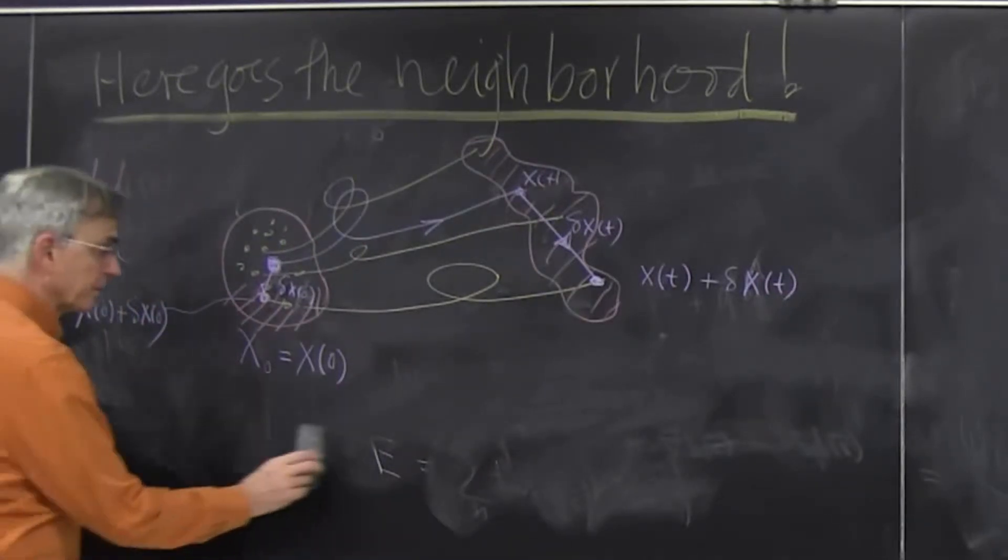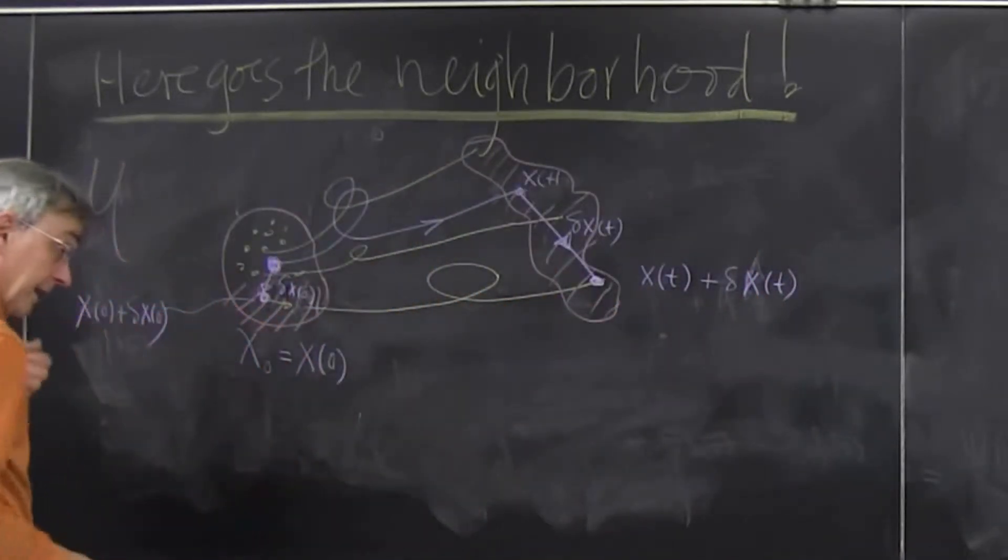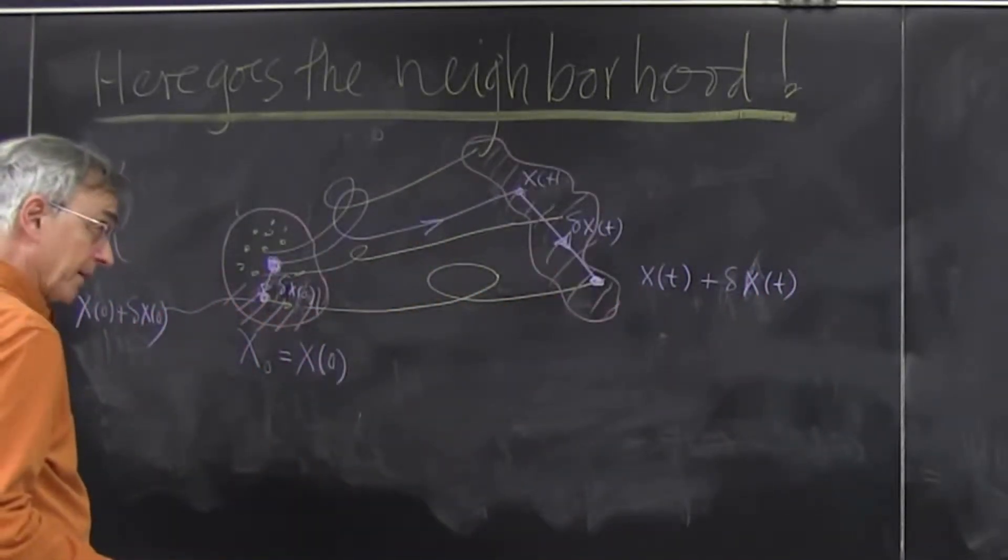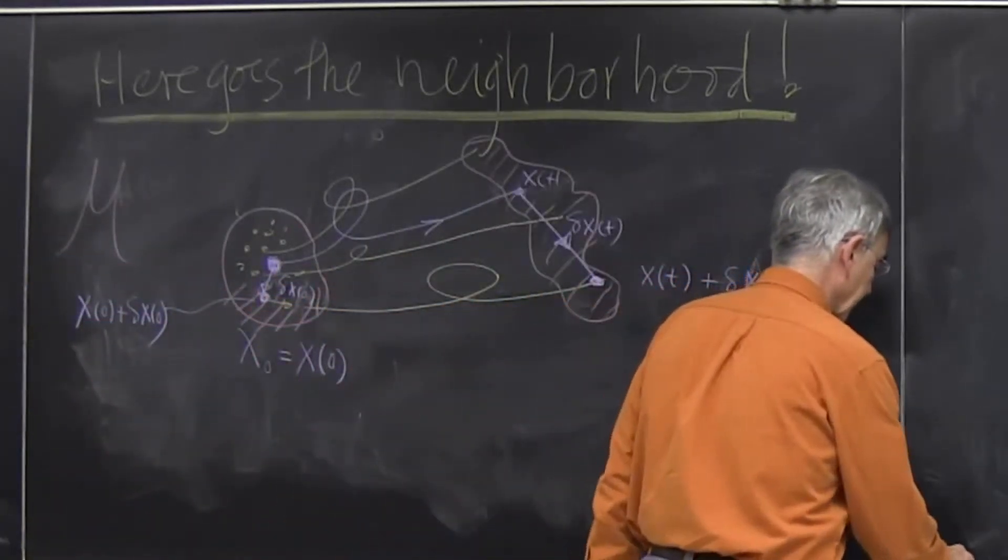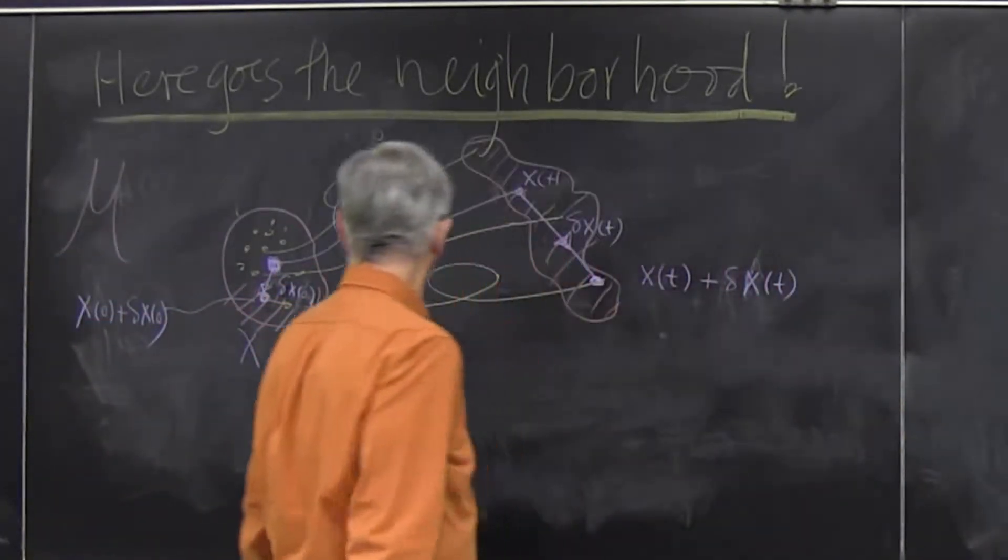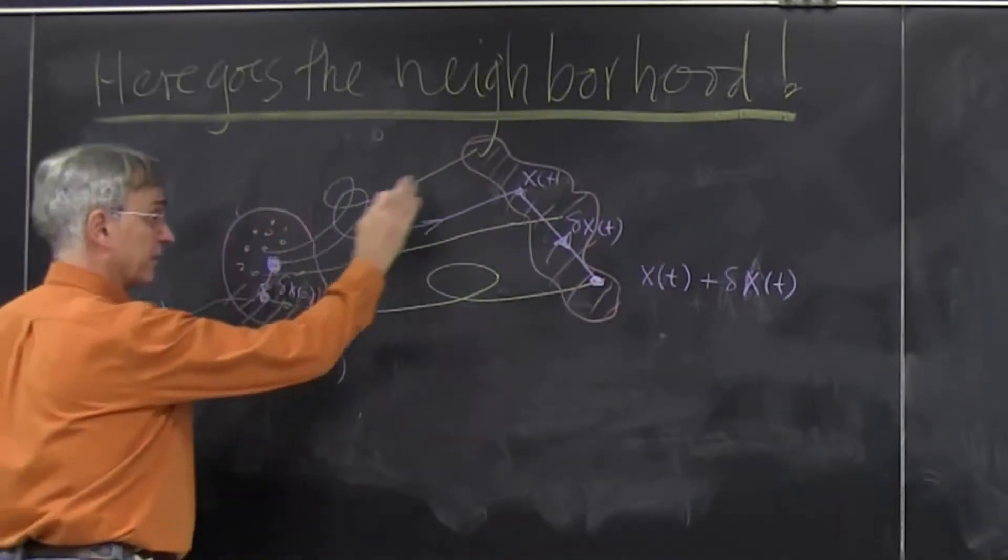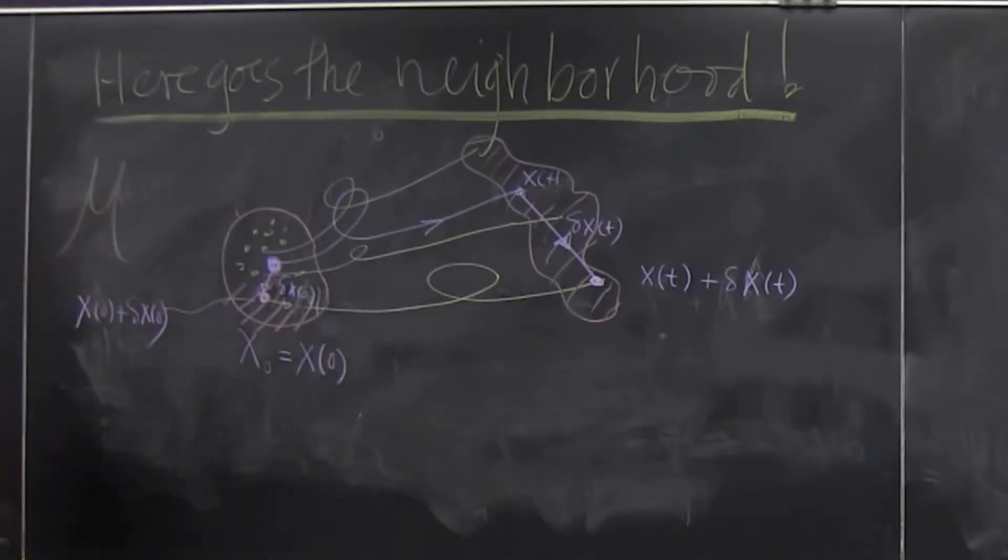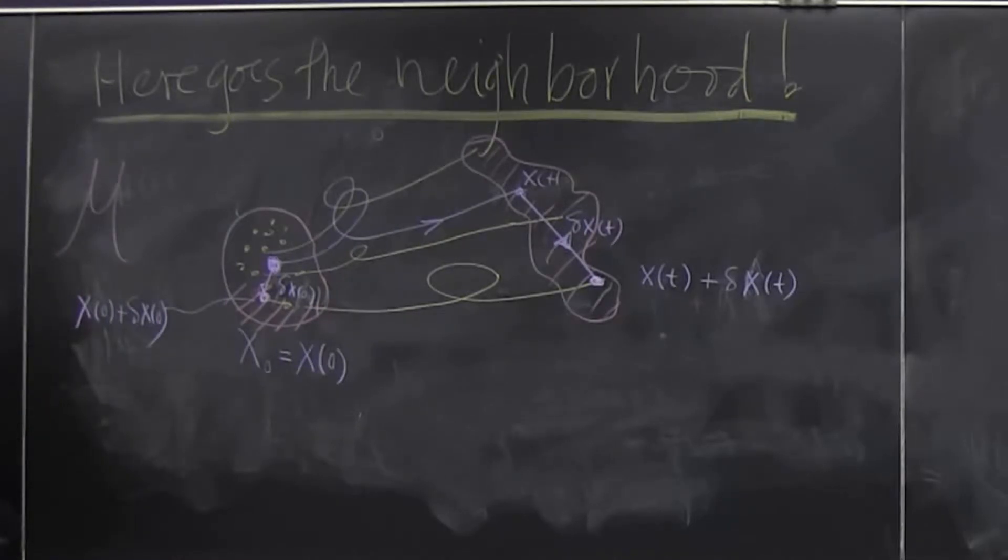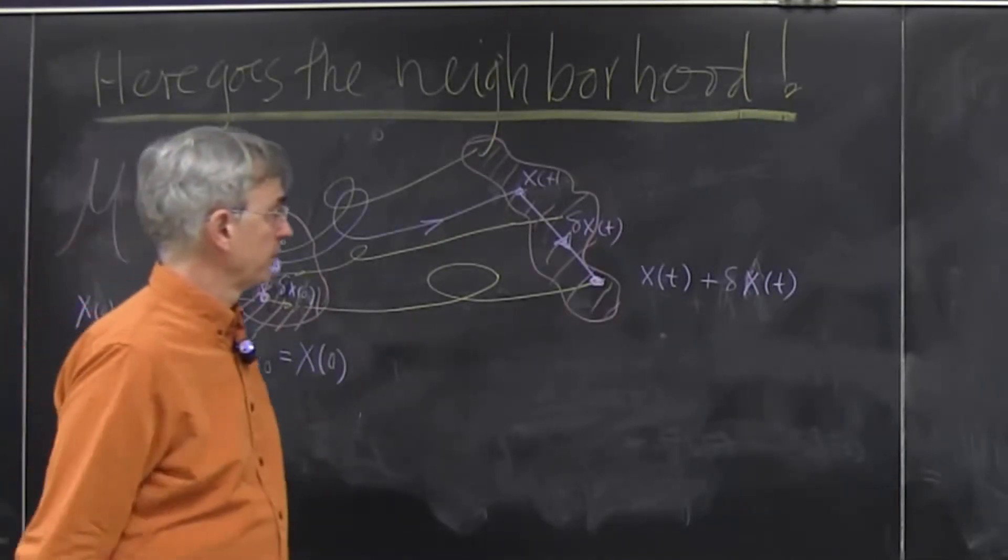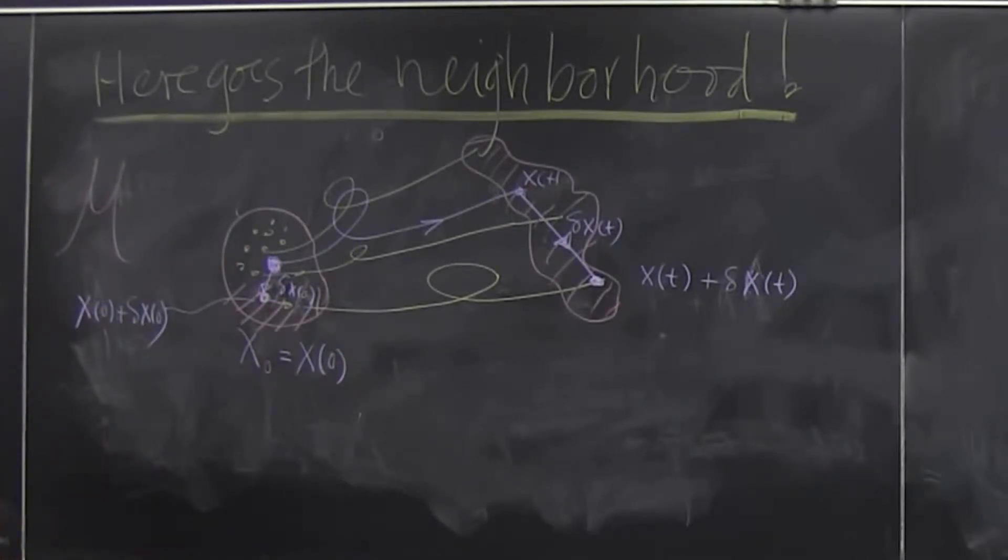And now we make an assumption which is a good assumption for most physical applications. There might be some set of exceptions which you treat specially, but most of the time this is good enough. We assume that this flow is differentiable, smooth and differentiable. We'll only use it as differentiable once, but in our mind we think it's a smooth flow, C infinity flow if you wish, infinitely differentiable.